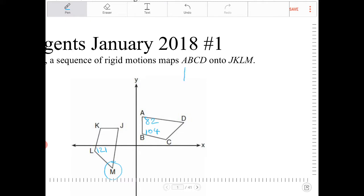So A, just from the notation here, I don't even have to look at the diagram. A will correspond with J, B corresponds with K, C corresponds with L, and D corresponds with M.